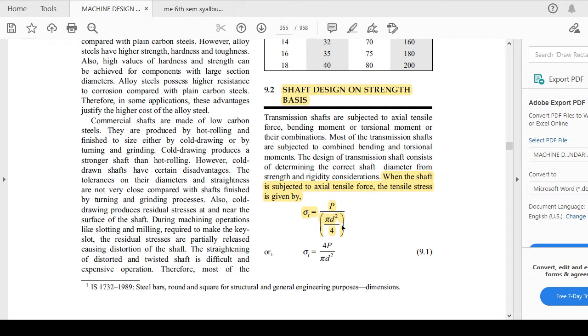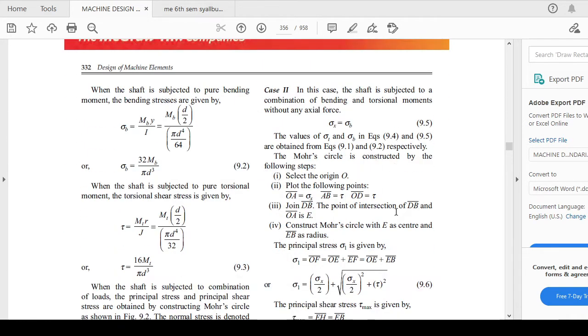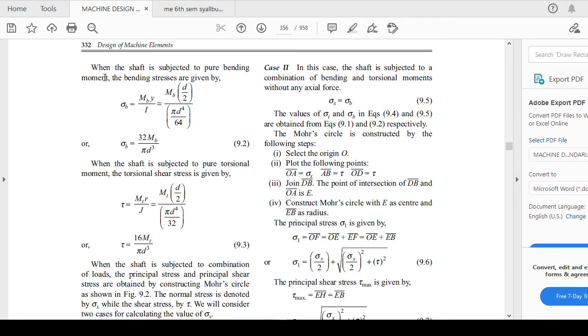When the shaft is subjected to axial tensile force, the tensile stress is given by σ_t = P/(π/4 × d²). This will calculate the tensile force applied on the shaft under tensile loading. Similarly, when there is pure bending moment, you can calculate the bending stress with the help of this formula σ_b.